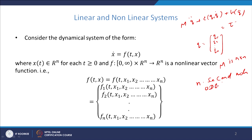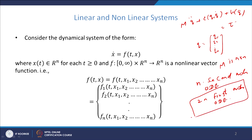We get n second-order ordinary differential equations which can be converted into 2n first-order ordinary differential equations. In that context we can say that this is a dynamical system. The definition is: any first-order differential equation written in the form ẋ = f(t, x) is called a dynamical system.